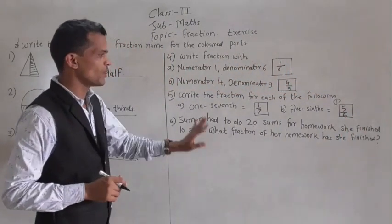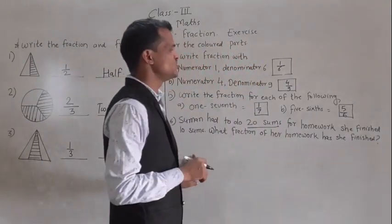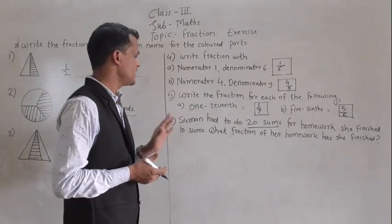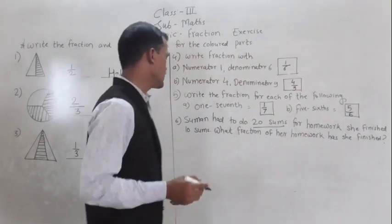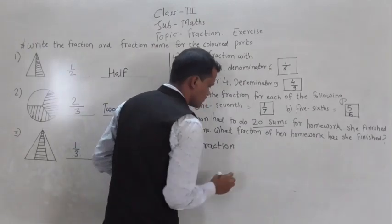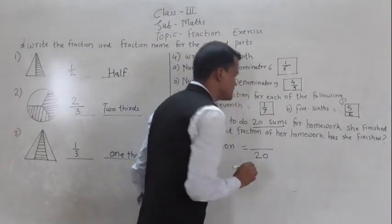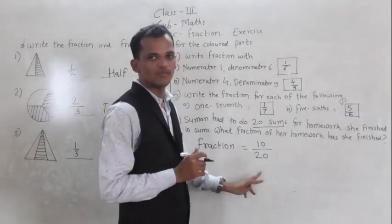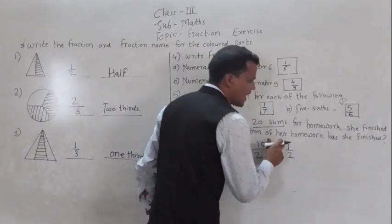Next word problem: someone had twenty sums for homework and she finished ten sums. Out of twenty sums, she finished ten sums. What fraction of her homework has she finished? So write the fraction: there are twenty total examples and out of twenty examples, she completed ten sums. The fraction is ten upon twenty, and ten upon twenty equals one upon two, means half.